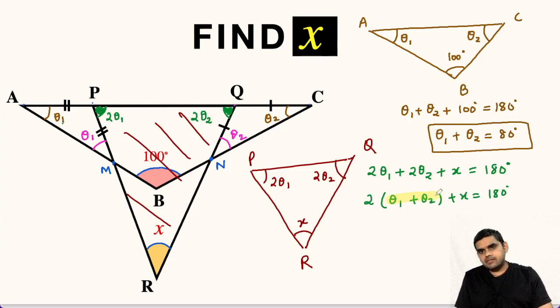Now in place of theta 1 plus theta 2, we can substitute 80 degrees. So this will be 2 times 80 degrees plus x equals 180 degrees.